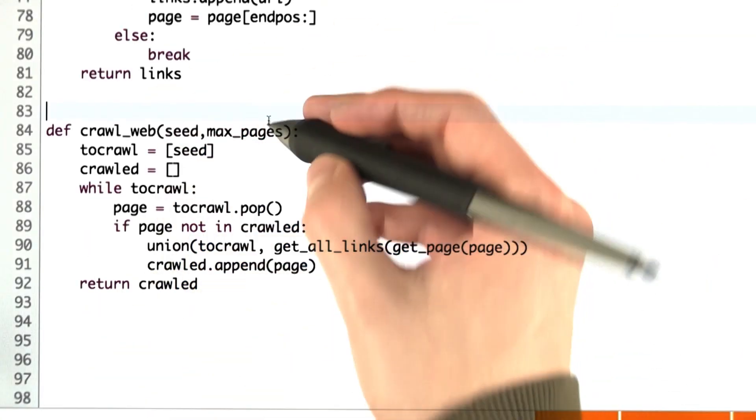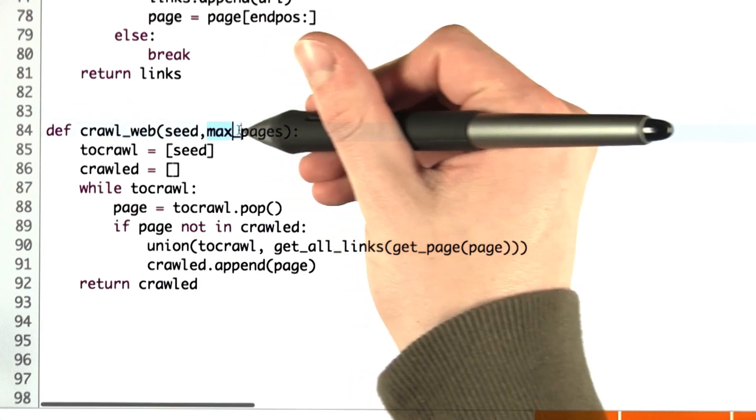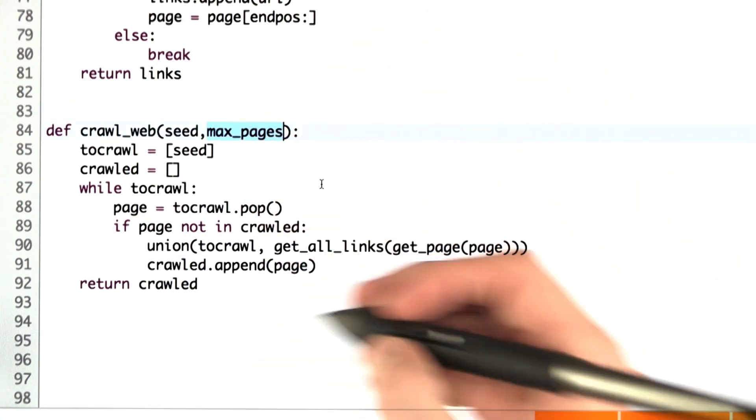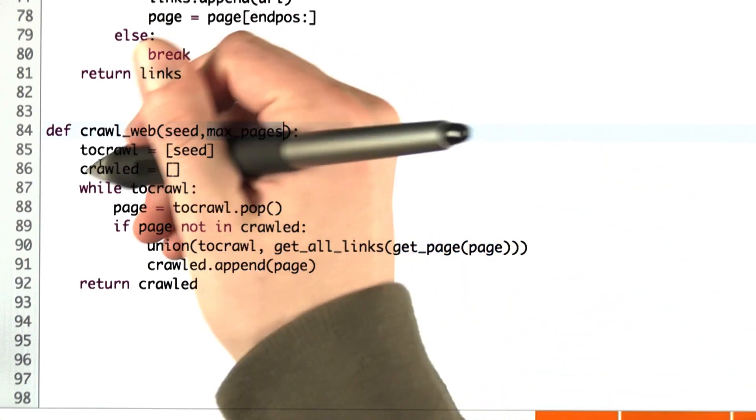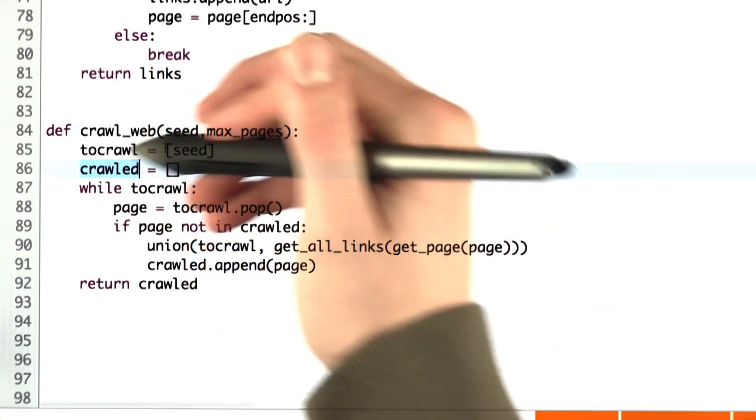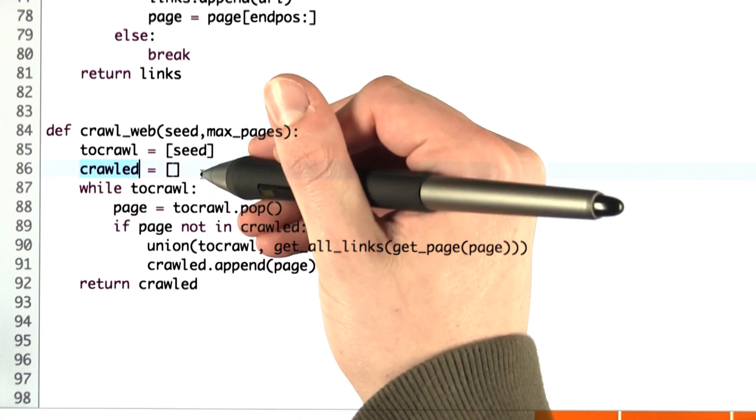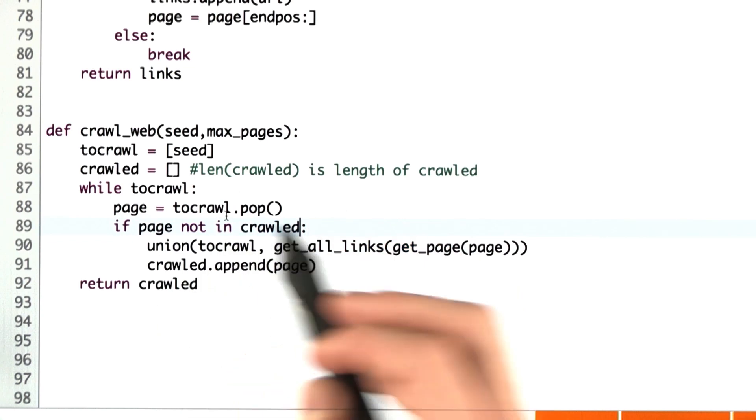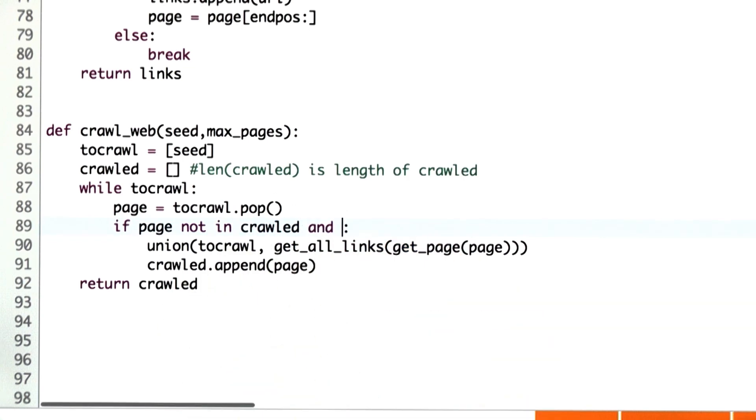Here we have the crawl web function. We take in a parameter, max pages, and we want to stop crawling once we've hit that number of pages crawled. An easy way to check is to simply look at the length of the crawled list, and we get that by using the len operator. So we don't only want to crawl a page if it hasn't been crawled, but we also only want to crawl it if the length of the crawled list is less than max pages.